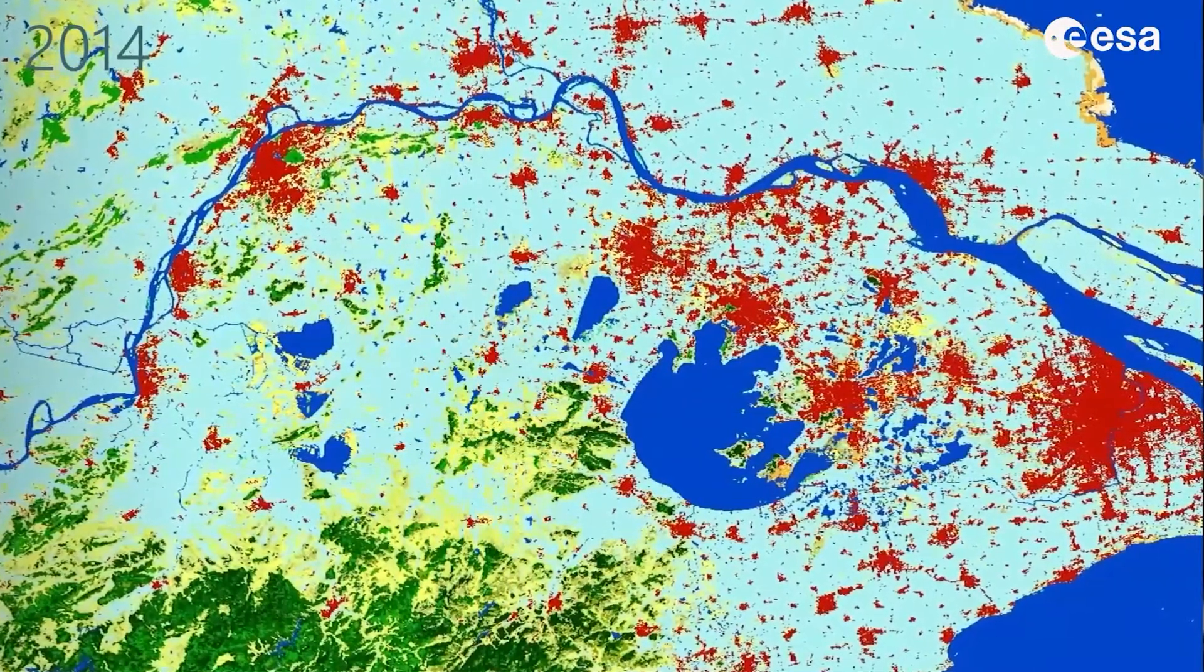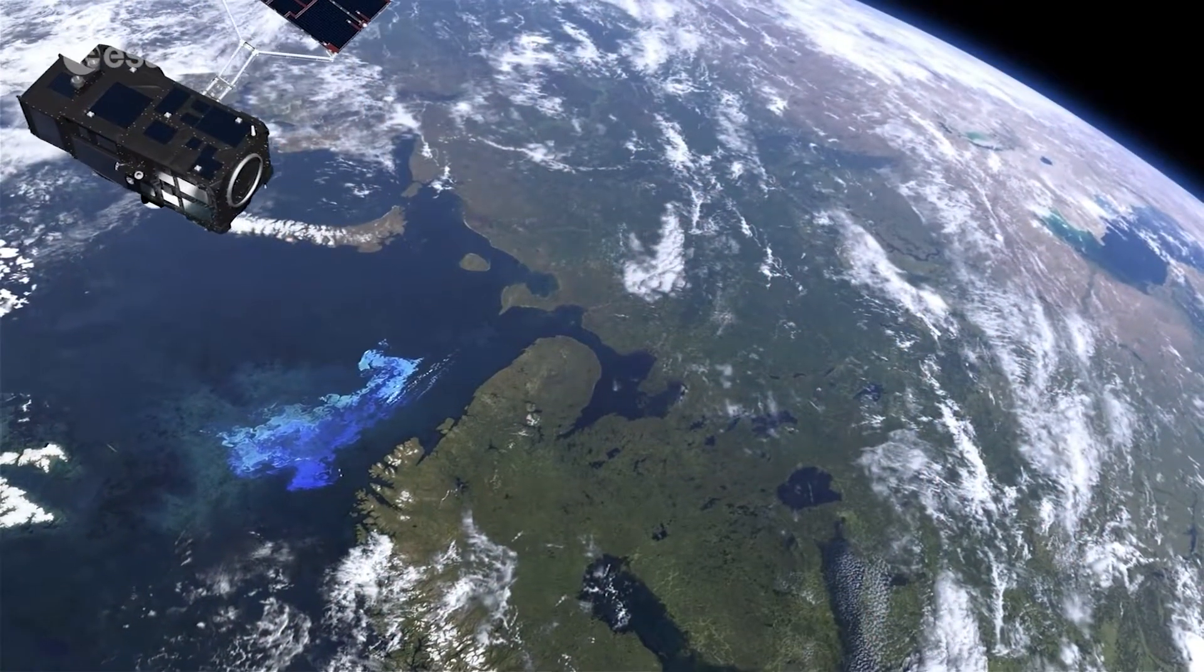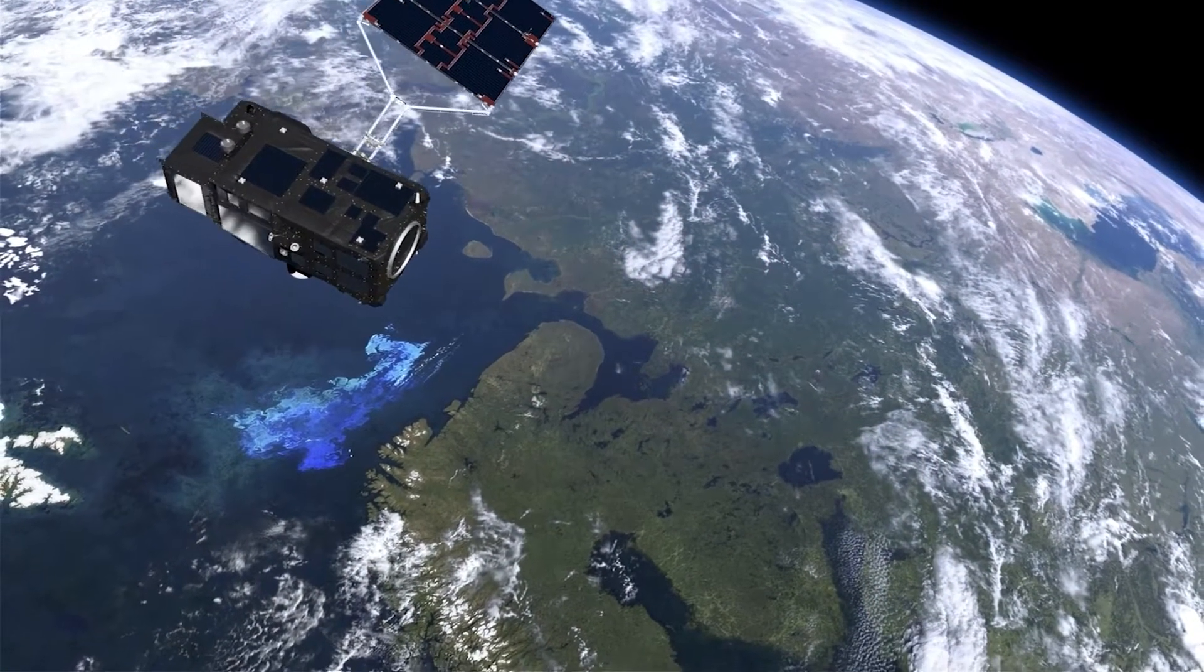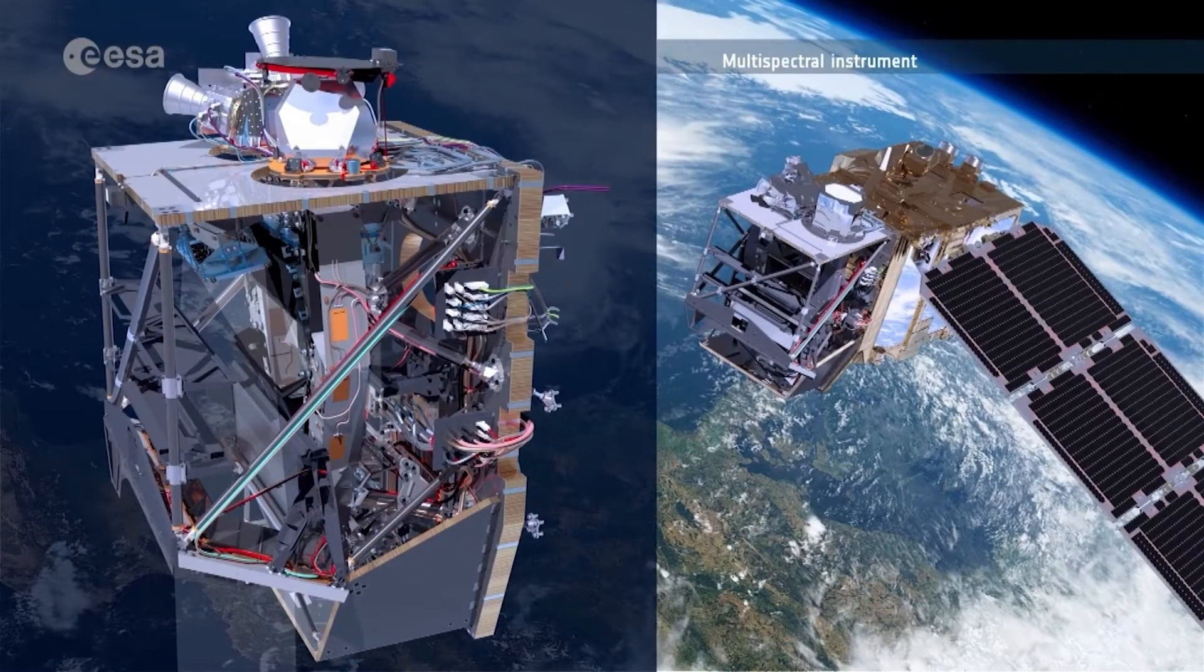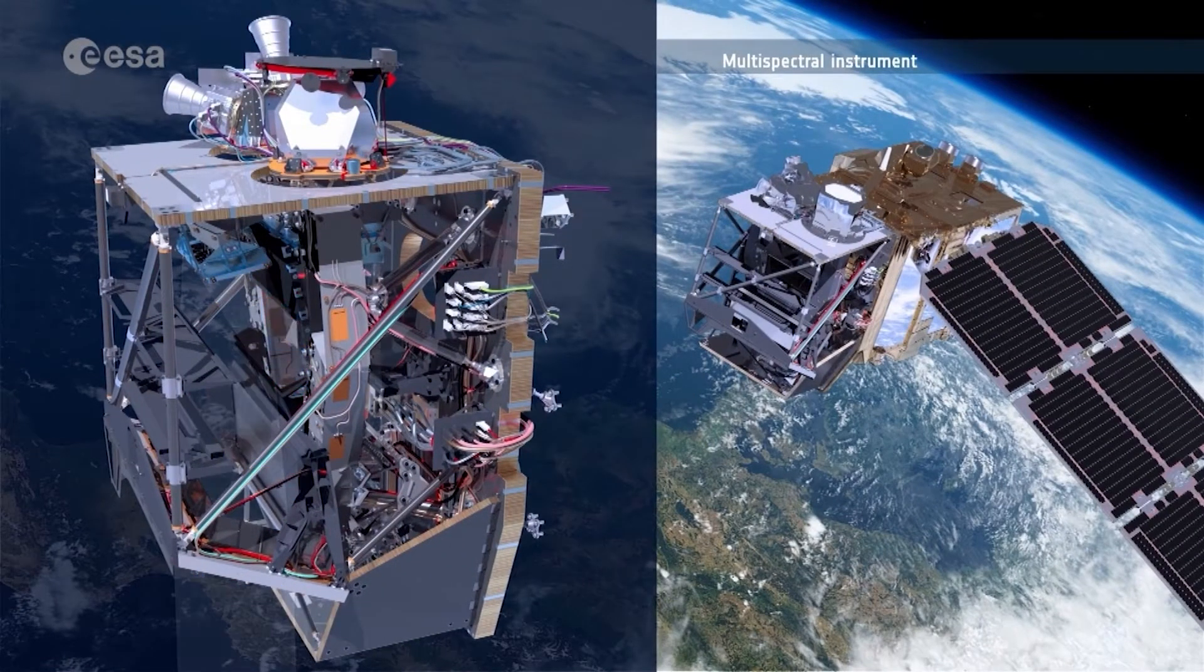But how does this happen, and what do those silent observers, the satellites, look like? What data do they supply us with, and how do they help us understand the highly dynamic processes on our planet and make us realize the role humanity plays?